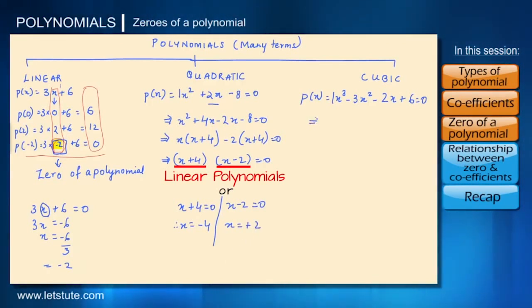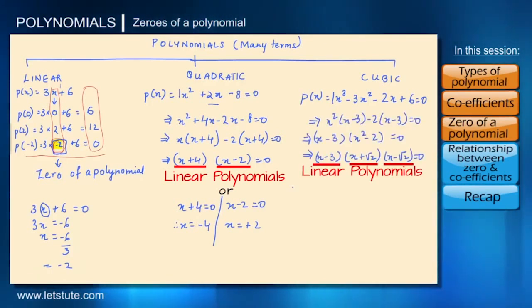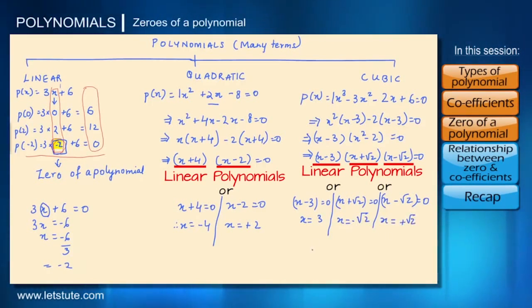Same way let's solve the cubic polynomial. So for cubic we've got them down into three linear polynomials. So x is equal to 3, x is equal to minus root 2 or x is equal to plus root 2.